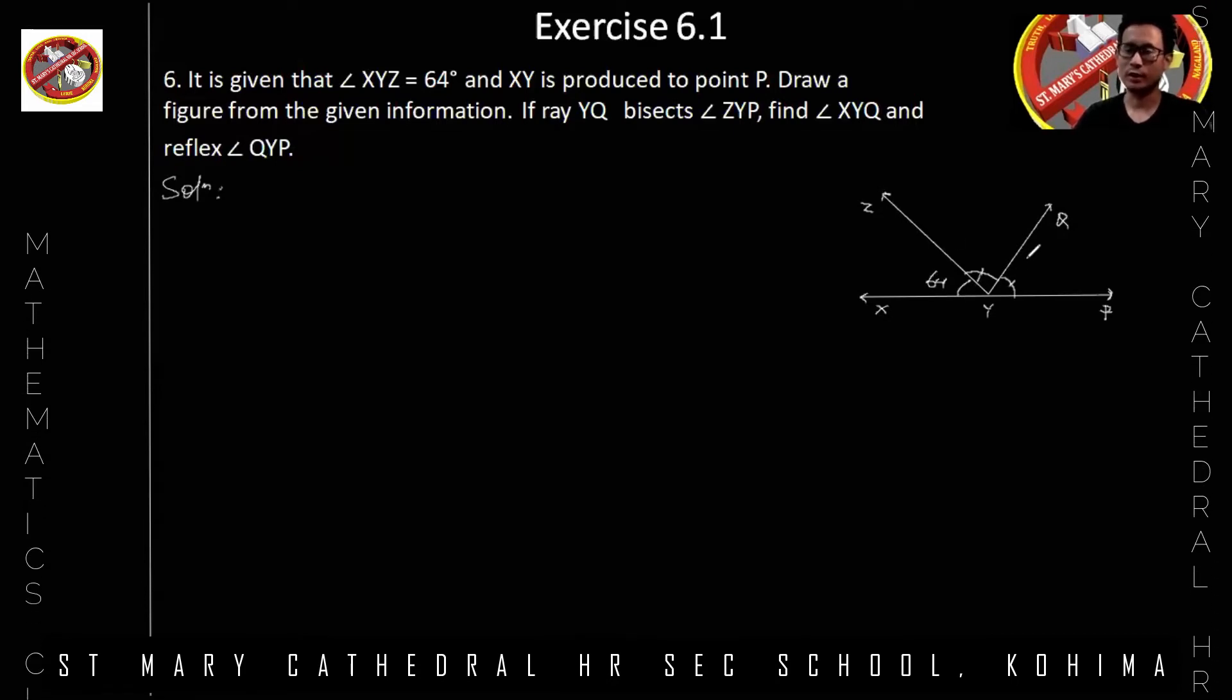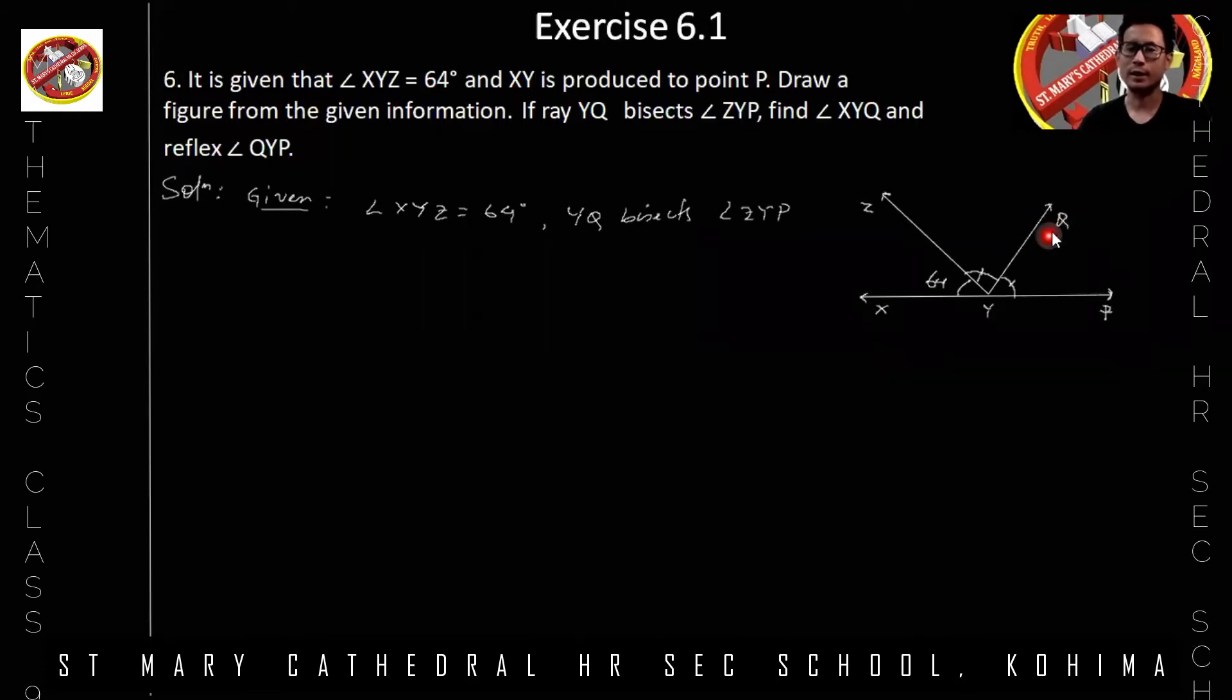Therefore, angle ZYQ is equal to angle QYP. Given angle XYZ is equal to 64 degrees, and YQ bisects angle ZYP. To find is angle XYQ, find this angle XYQ, and reflex angle of angle QYP. Reflex angle QYP.